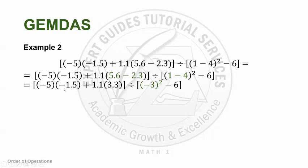That's what we do first in this bracket. In this bracket, what do we do next? Exponent, because there's still a square. So we can perform negative 3 being squared. Our equation would be 7.5 plus 3.63. Notice here, we also performed 3.3 times 1.1 because they're multiplied together. So after multiplying both, we get 7.5 plus 3.63 divided by 9 minus 6.